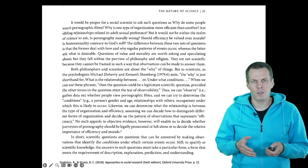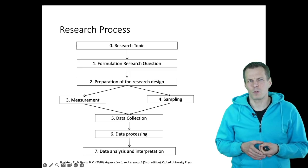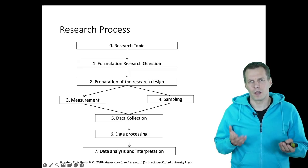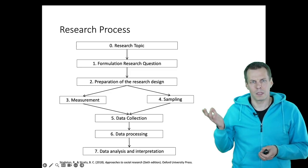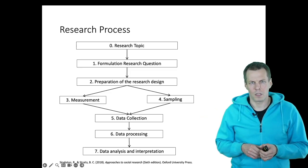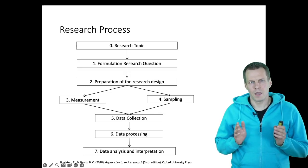So a research question is any question that we can answer by collecting data and establishing facts through the research process. So what is research process then? This is an example of research process. You can find this kind of diagrams in many different research methods books. This is my favorite, it comes from Singleton and Straits.